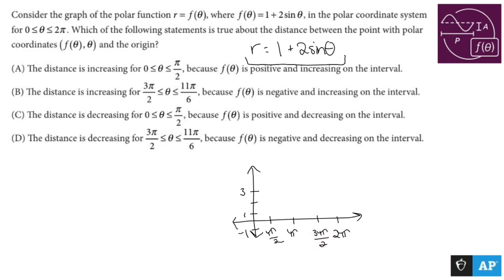So the graph of 1 plus 2 sine theta has me starting out at 1, going up to 3 at π/2, going down to 1 at π, going down to negative 1 at 3π/2, and then repeating itself at 2π. So if I were to draw this as a picture...